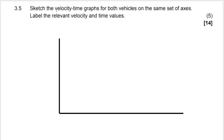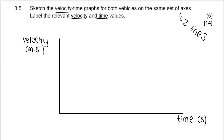Our next question wants a velocity-time graph for both vehicles on the same set of axes — so I'll have two lines on my velocity-versus-time graph. They want us to label the relevant velocity and time values, meaning those values which were given or calculated. Velocity goes on the y-axis and time goes on the x-axis.